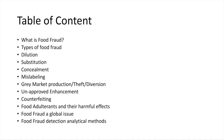In this session we will discuss the following topics: what is food fraud, types of food fraud including dilution, substitution, concealment, mislabeling, gray market production, theft or diversion, unapproved enhancement, counterfeiting, food adulterants and their harmful effects, food fraud as a global issue, and food fraud detection and analytical methods.